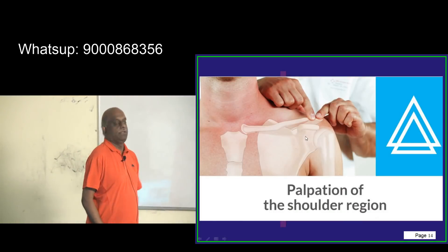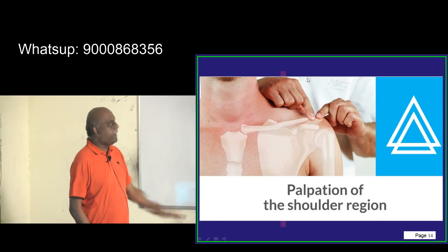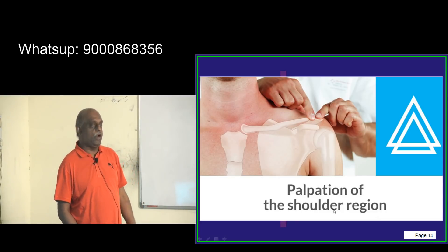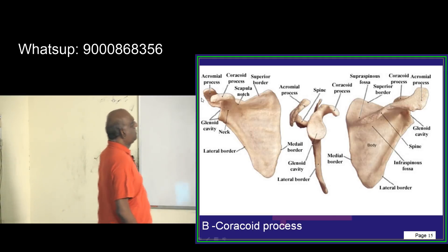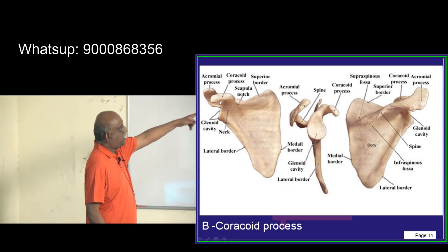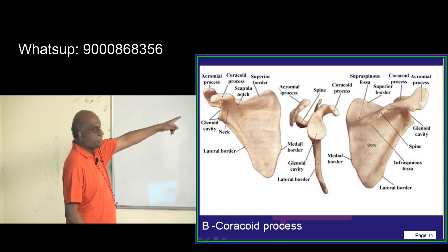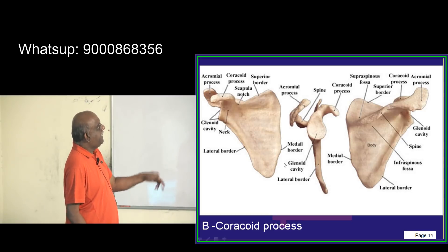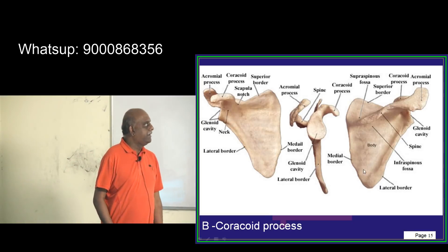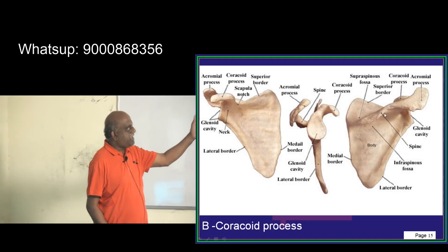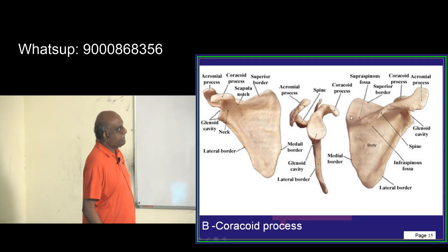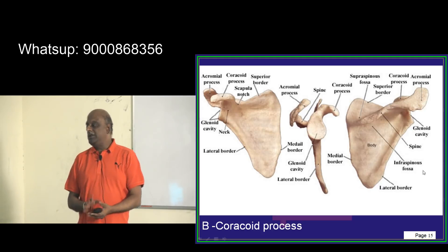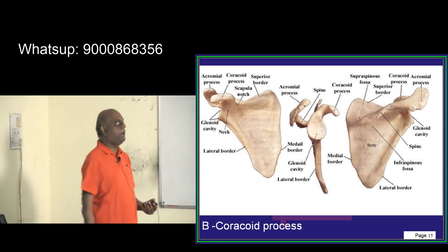So if you palpate the shoulder region, you should be sure about the various parts of the scapula — where is the coracoid process, the acromial process, the scapular notch, the superior border, the glenoid cavity between the two processes, the lateral border, the medial border, etc. Similarly on the posterior aspect, you have the spine of the scapula and the infraspinous fossa of the scapula. All these structures you should be doubly sure about anatomically.